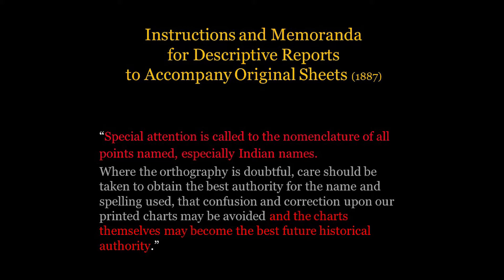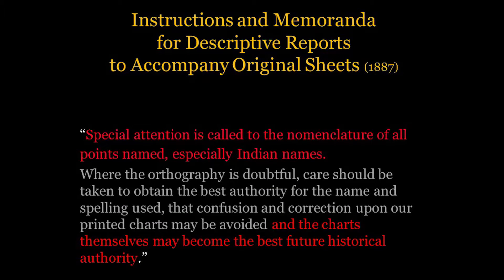A lot of things culminated in 1887 when the superintendent of the Coast and Geodetic Survey, Frederick Thorne, issued this set of instructions and memoranda for descriptive reports to accompany original sheets — meaning those unpublished manuscript maps, the T-sheets, the H-sheets. It's about a six-page document that basically comes down to: notice everything. Pay particular attention to subtle things; get all the obvious things too; talk to people; get all the names. 'Special attention is called to the nomenclature of all points named — especially Indian names.' I think this is really a high point among many low points in the federal government's understanding of natives anywhere in its territory, particularly considering what other elements of the U.S. government were doing to natives all over the place in 1887.